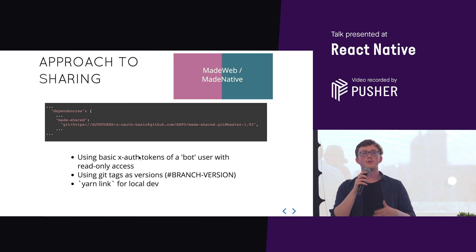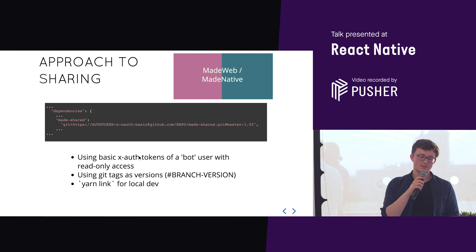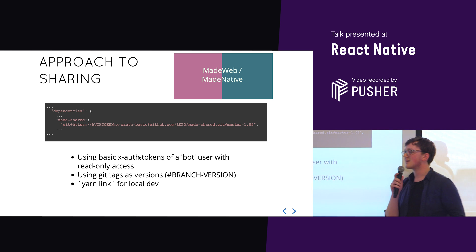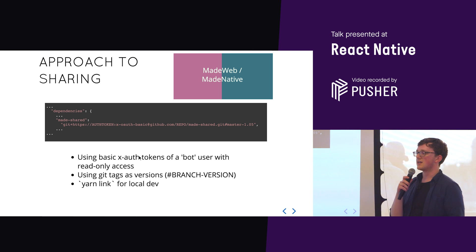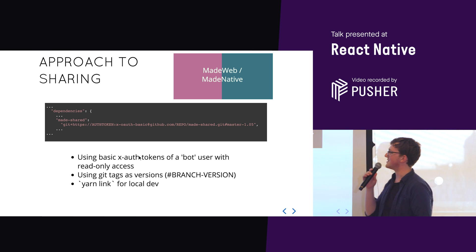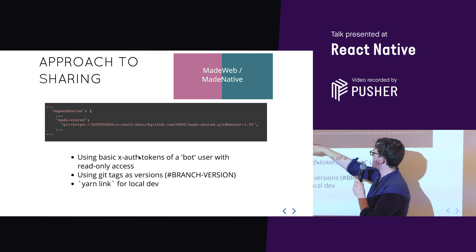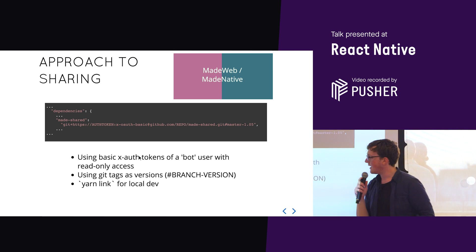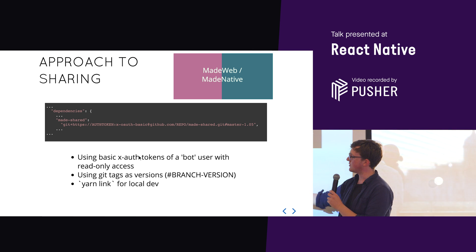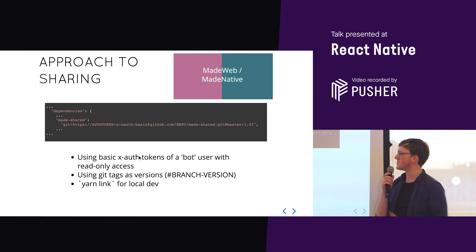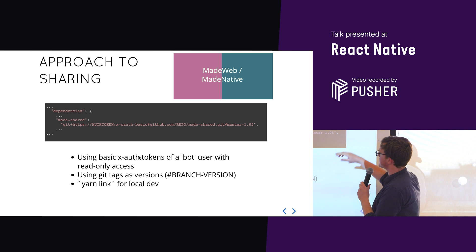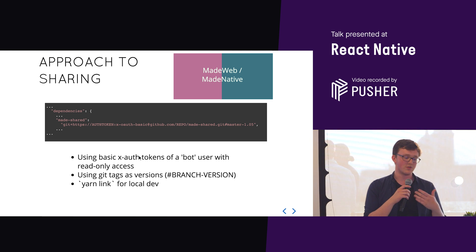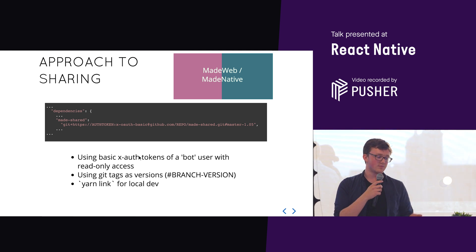How do we publish a private repository? Initially we did it with Git tags, with a bot account on GitHub with a basic authentication token — not a best practice in any way. We put the authentication token in the package JSON, the repository name, and a Git tag versioned on the branch name. It worked quite well, and Yarn link was really useful for local development. But it didn't really scale — versioning had no semantics, and from a security point of view we didn't like having the authentication token in source code.